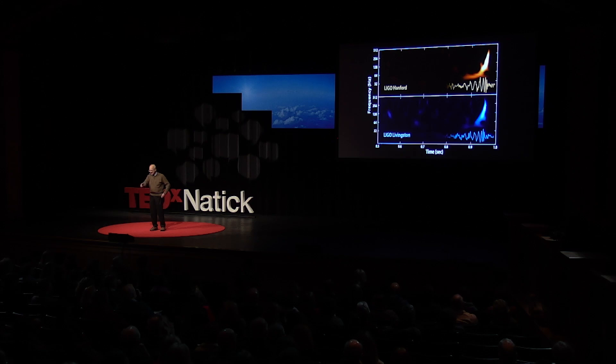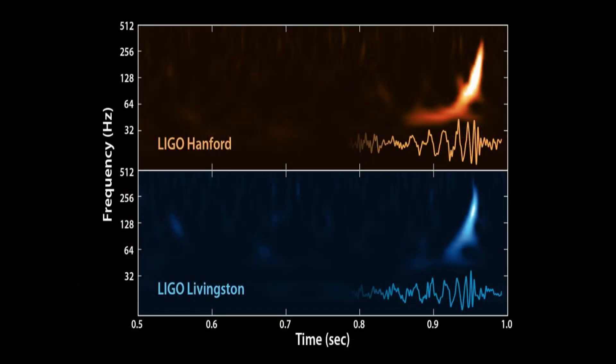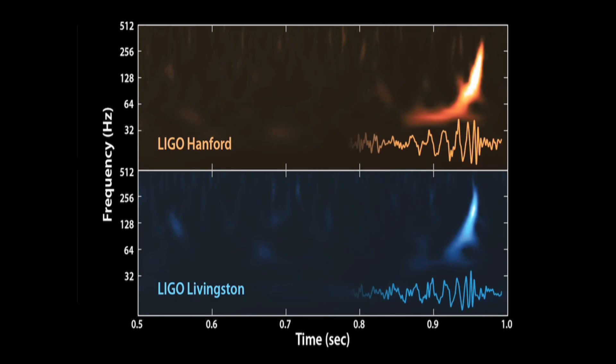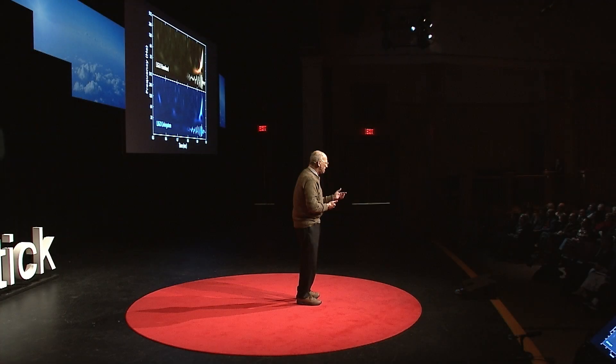Here's another way to look at it. The bottom axis is time again, and now the vertical axis is the frequency of sound — 256 hertz is middle C on a piano. The brighter the region, the more sound at that frequency. You can see a little chirp at the end. As these objects get closer and closer, they go faster and faster and smash into each other — that's the chirp you can hear.